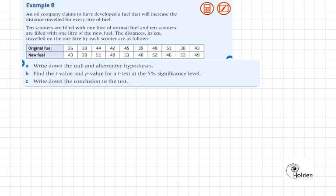Write down the null and alternative hypotheses. Important because we need to know what we're going to be testing and we're going to be typing this into our calculator. H0 is that the two means are the same, that there is no difference in the means between the distance travelled with the original and new fuels.